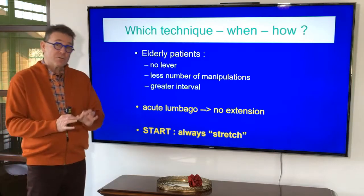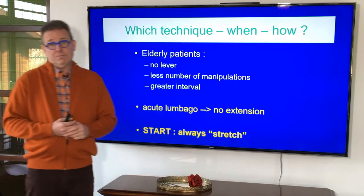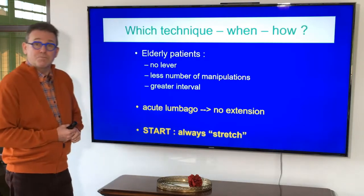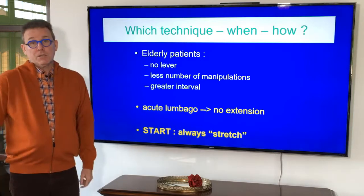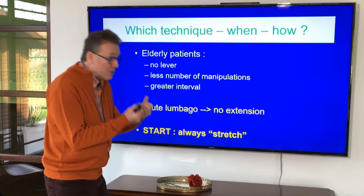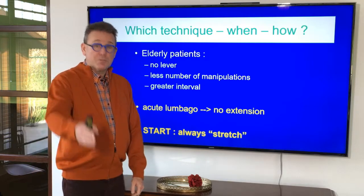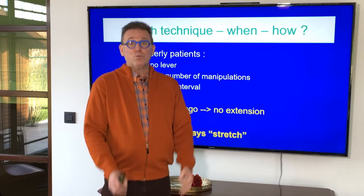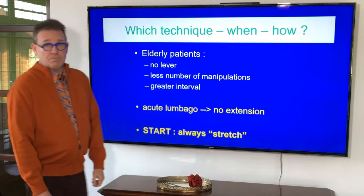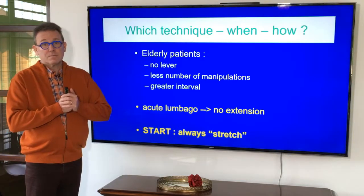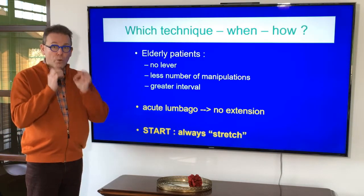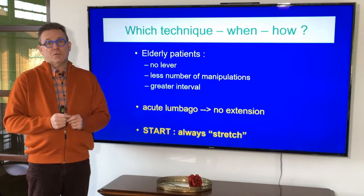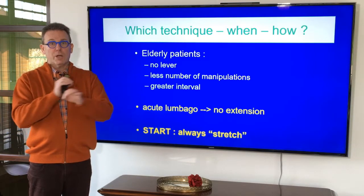A fixed general rule: if a patient has an acute lumbago — a big posterior or central internal derangement — you never do extension techniques. He's blocked in flexion; extension is very painful and limited. If you ask the patient to lie on his abdomen for an extension technique, that would be torture. And if you decide to manipulate, you always start with the stretch maneuver as the first manipulation. Always. No exception.